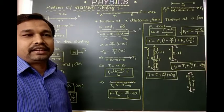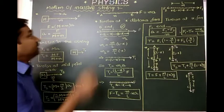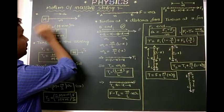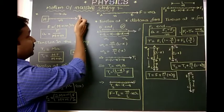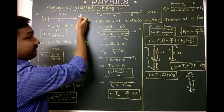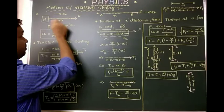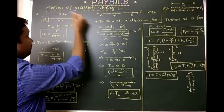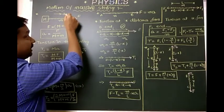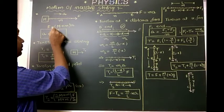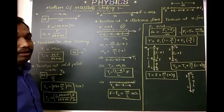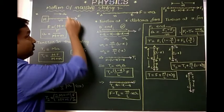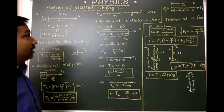Hi friends, welcome back to our channel. Today we are going to discuss one more concept: motion of a massive string. Here we are considering one block connected with a string, with a force F exerted on it. The mass of the string is m, the mass of the block is M, and the minimum force required to accelerate the system with acceleration a is F equals (m + M) times a.